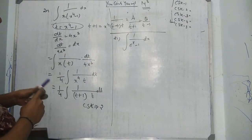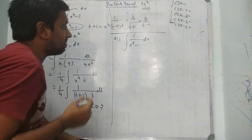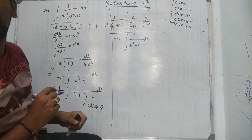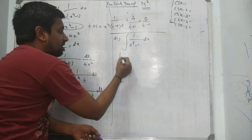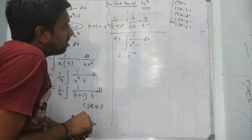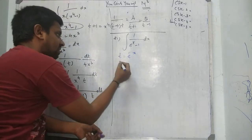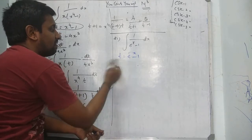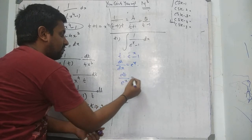Is it possible to factor eˣ minus 1? No, nothing is possible — you have to convert into another variable. Let t equal to eˣ minus 1, so eˣ equals t + 1. Now dt/dx equals eˣ, so dt/eˣ equals dx.